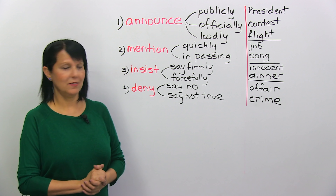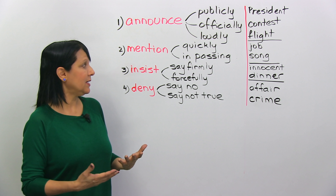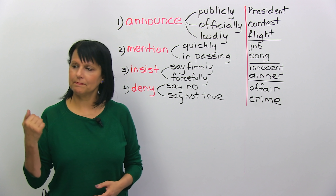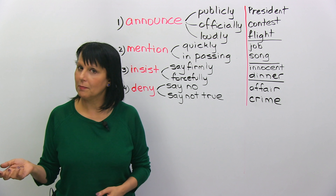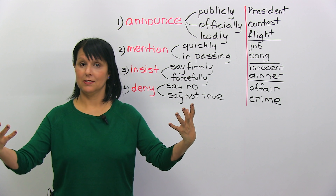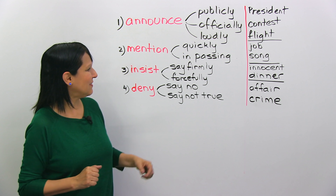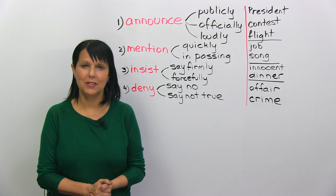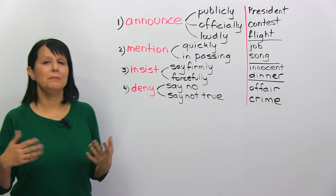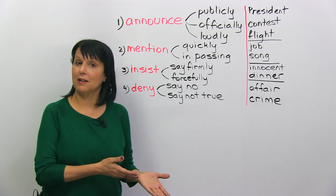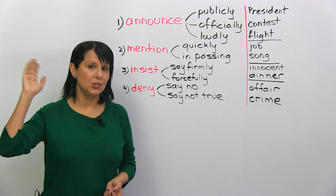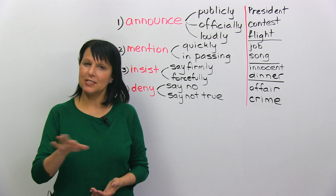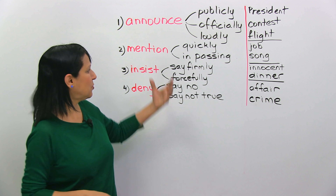Next is 'mention.' Mention is much quieter — it's when we say something quickly or in passing. For example, he mentioned that he was looking for a job. He didn't come out and announce it, he just mentioned it in passing. Our famous Canadian singer Gordon Lightfoot had a beautiful song called 'Did She Mention My Name?' — about someone wanting to know if she still remembered him. Did she mention his name? Did she say it in passing? That's the word 'mention.'